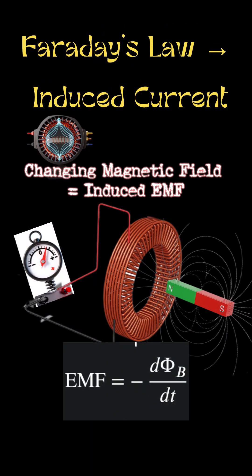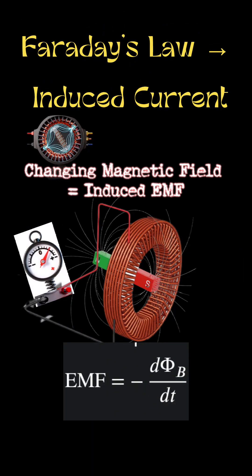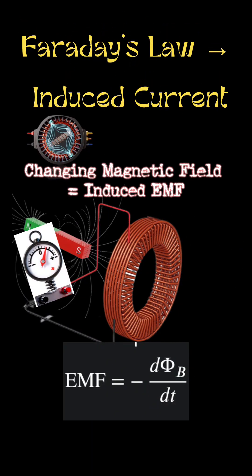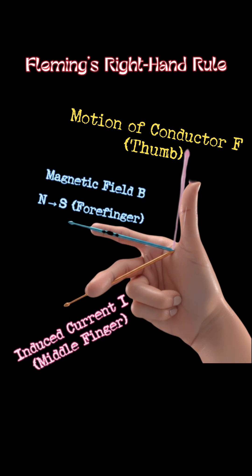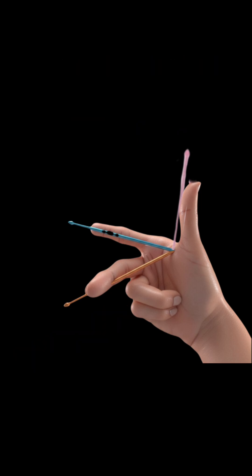In the last shot, we saw that a change in magnetic field produces current. Fleming's right-hand rule helps find the current direction. The thumb shows motion, the forefinger shows the magnetic field, and the middle finger shows the induced current.